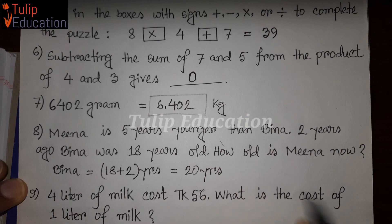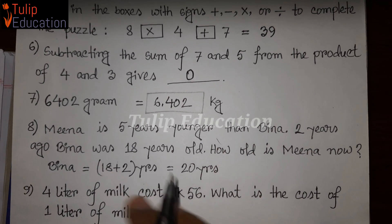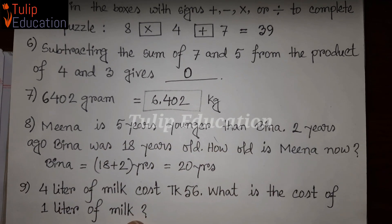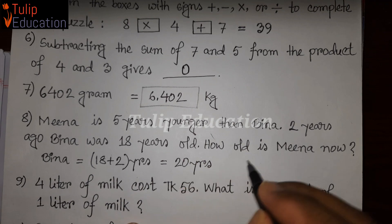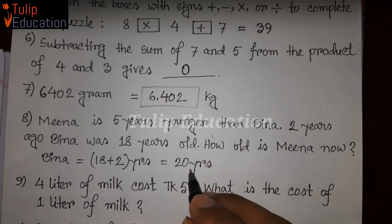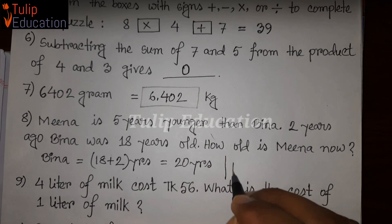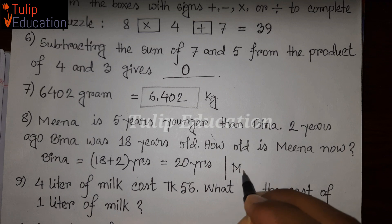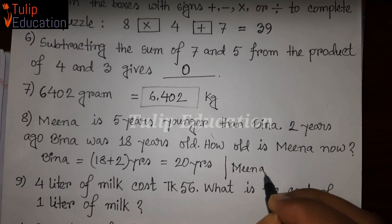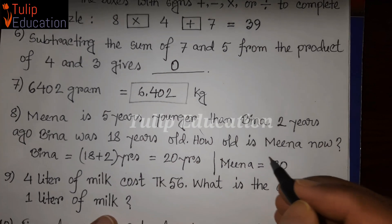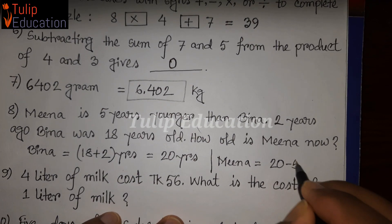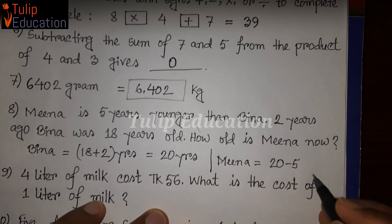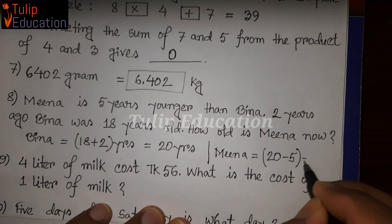Since Meena is 5 years younger, we subtract 5 from 20. So 20 minus 5 equals 15 years. The result is 15 years.